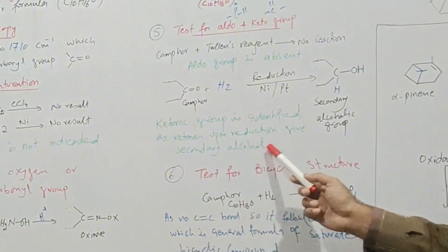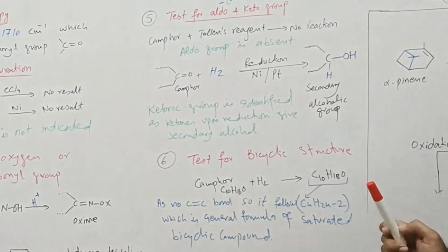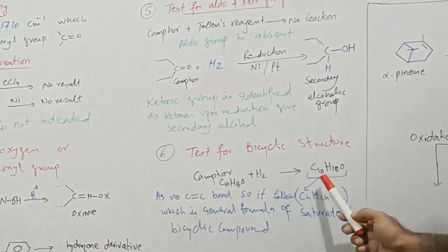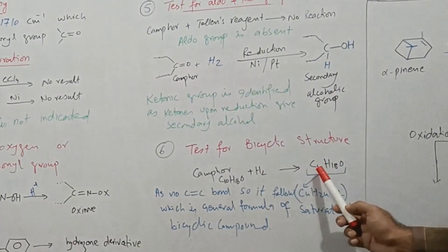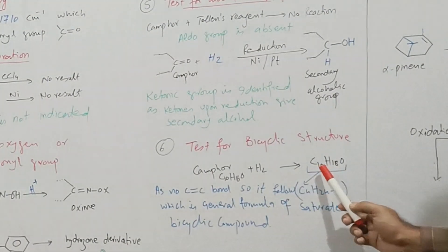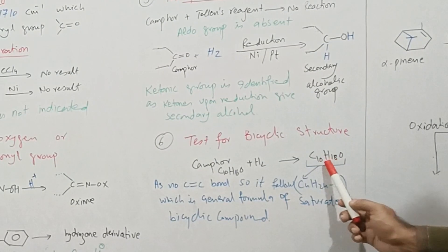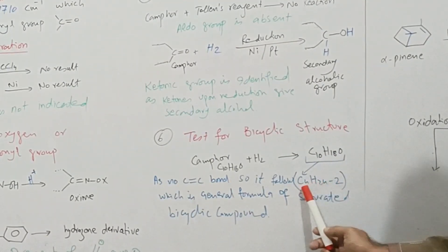How many rings or cycles are present in this structure? When camphor is hydrogenated, then after addition of two hydrogen atoms its molecular formula becomes C10H18, which obeys this general formula. And this is the general formula of bicyclic compound.